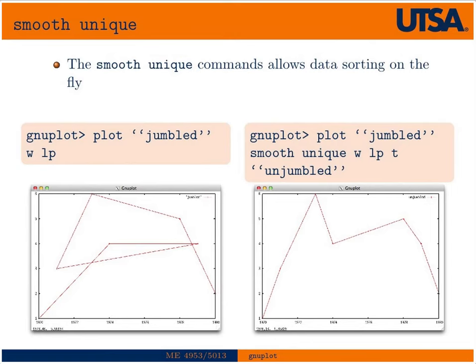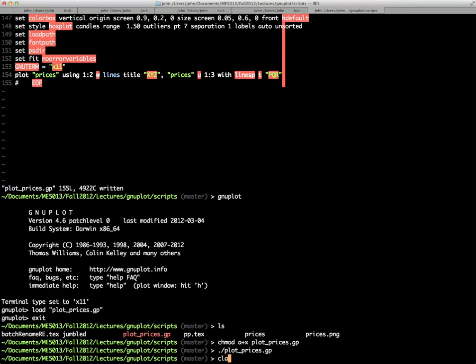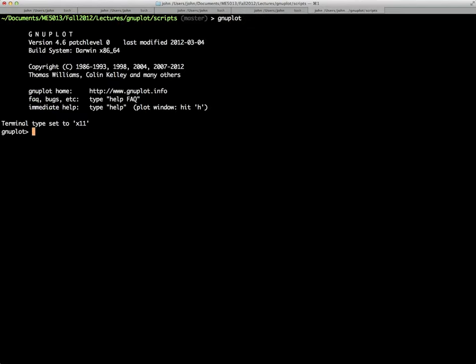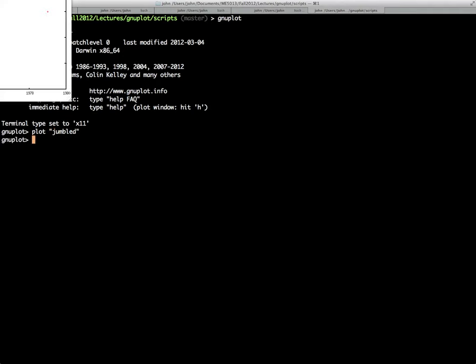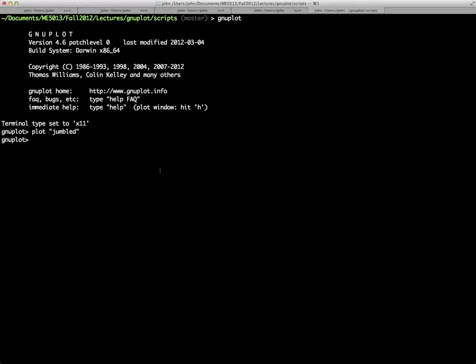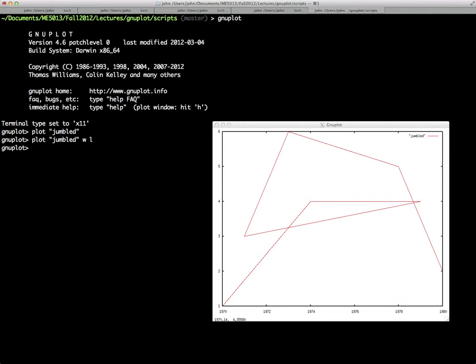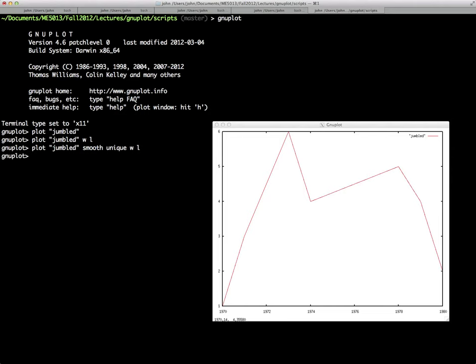So the next thing we're going to talk about is smoothing data. So gnuplot has some nice features for smoothing the data or making the data plot more unique or plot the data better in a sorted fashion. So it could be a case where you have some data that's jumbled up. So if we just say plot jumbled, you'll see the points there. But if we connect them with a line, so if we say plot jumbled with lines, then you can see that they're not in order. So the lines don't mean anything. So then what we could do is actually plot, we could issue the directive smooth unique with line. And then what you'll see is that it actually sorts based on the x column or the first column. It sorts the data and then plots it such that we get a line that's meaningful.